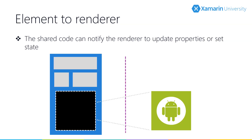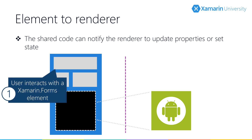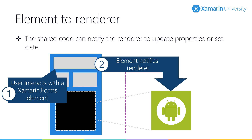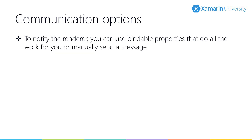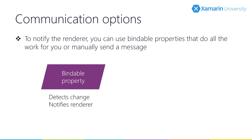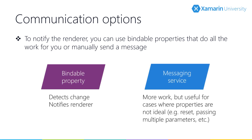It's also very common to send runtime changes to the renderer. For example, a user may interact with a control that we want to use to change another control's color or enabled state. We need to send a notification to the renderer and respond, probably by updating the native control. This should sound familiar — it's exactly what we did in the previous section when we defined a bindable property on the element and responded to property changes in the renderer. For scenarios where bindable properties don't make sense, such as resetting state or passing multiple parameters, we can use another technique such as a messaging service. We need to be careful not to create strong references between the element and the renderer, so the Xamarin Forms MessagingCenter is a good choice.